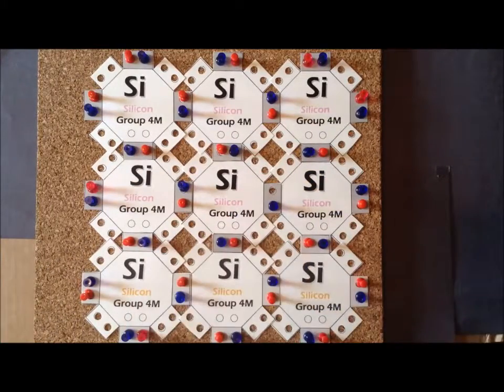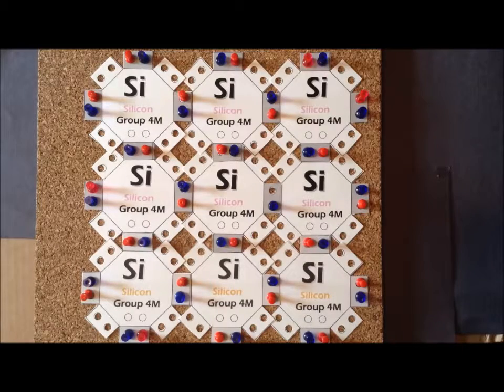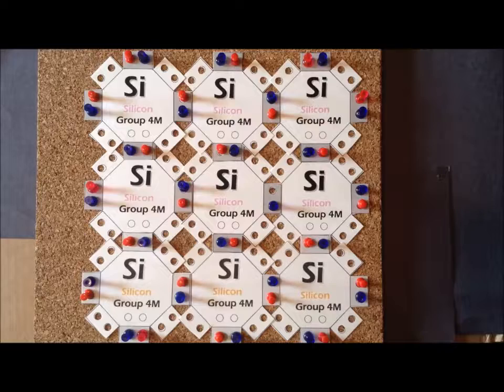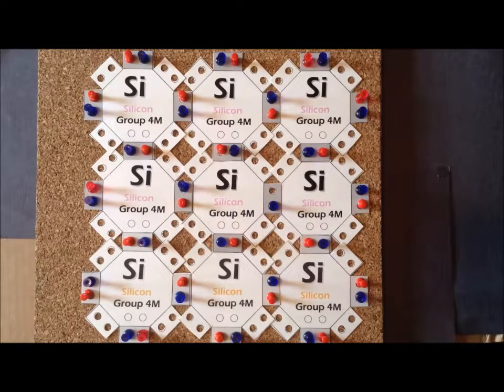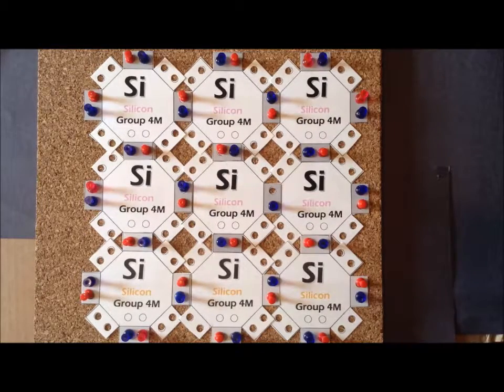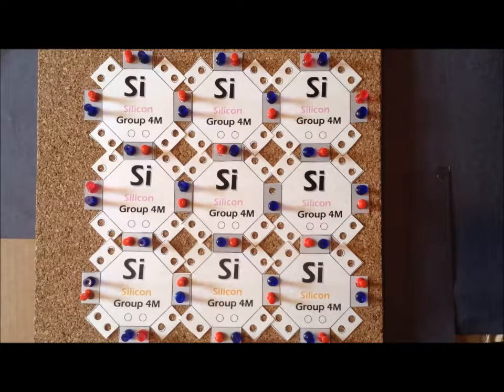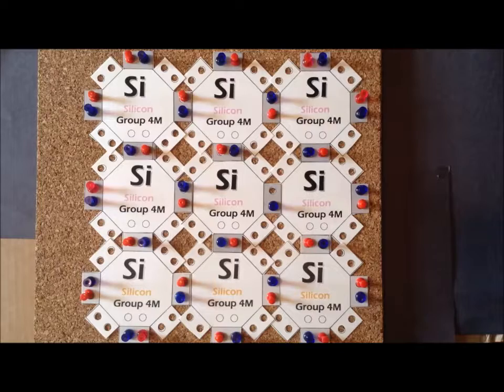So we see that in a semiconductor like silicon, when one electron is promoted into the conduction band—a negatively charged particle that is free to move—we have left behind a hole, and the hole is also free to move throughout the valence band.